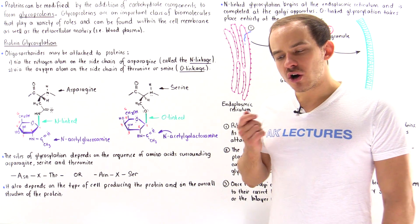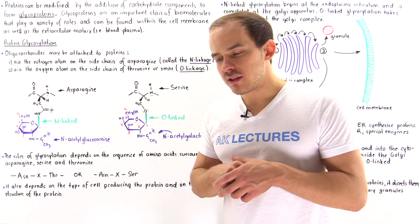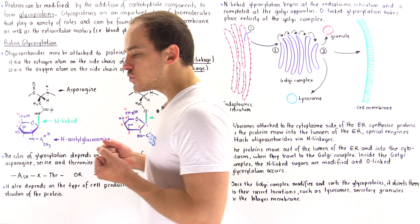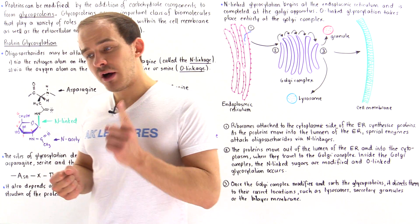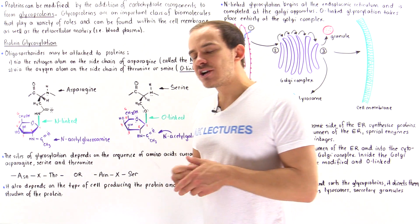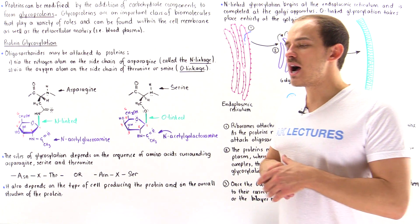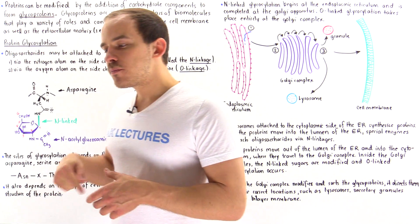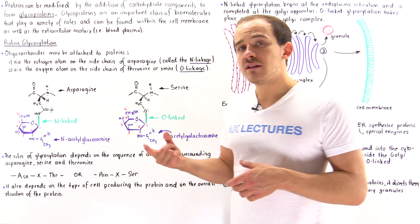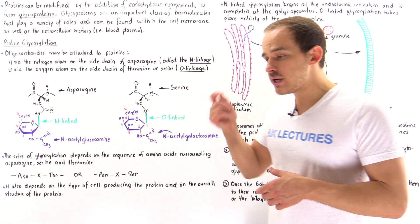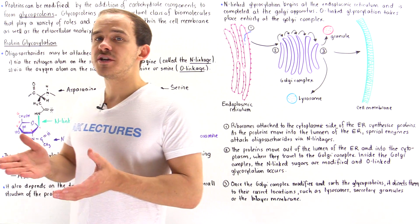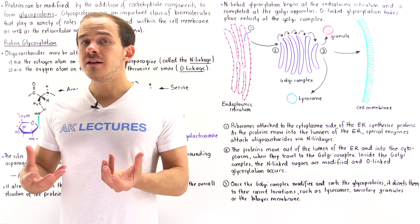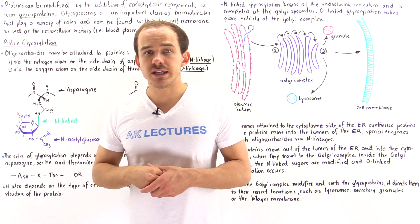Carbohydrate molecules aren't only used as energy molecules and they're not only used to provide the matrix around the cell structure and integrity, but they can also be used to modify the properties and increase the functionality of protein molecules. The process by which we covalently attach a carbohydrate component onto a protein molecule is known as protein glycosylation, and this type of molecule is known as the glycoprotein.